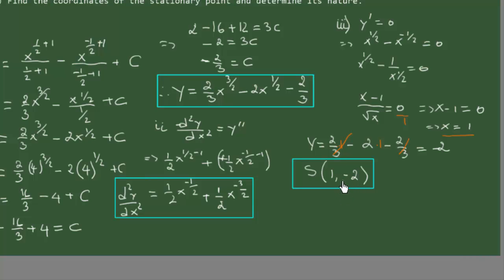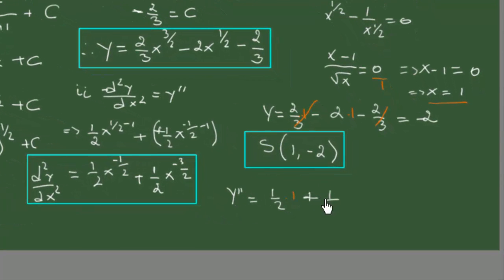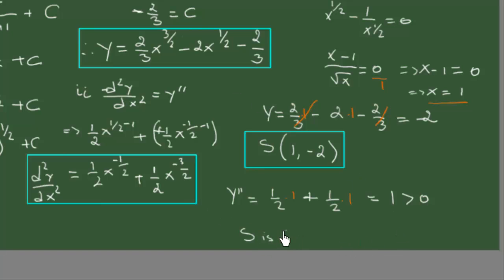To determine whether this point is a minimum or maximum, we substitute x equals 1 into the second derivative. We get y double prime equals 1.5 times 1 to the power of minus 1.5 plus 1.5 times 1 to the power of minus 3.5, which equals 1.5 plus 1.5 equals 3. Since this is greater than zero, the stationary point is a minimum.